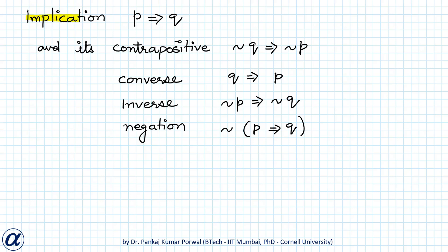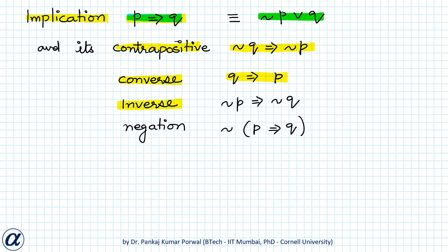In this lecture we are going to learn about logical implication, that is p implies q, and various statements derived from it. The first thing is that p implies q is equivalent to not p or q. The contrapositive of p implies q is not q implies not p. The converse of p implies q is q implies p. The inverse of p implies q is not p implies not q.